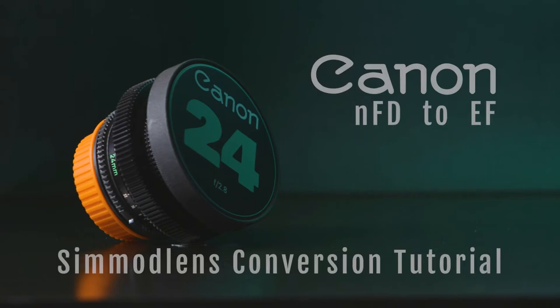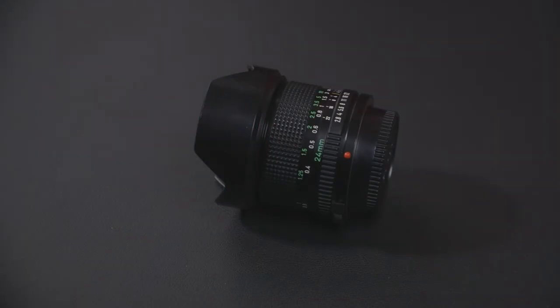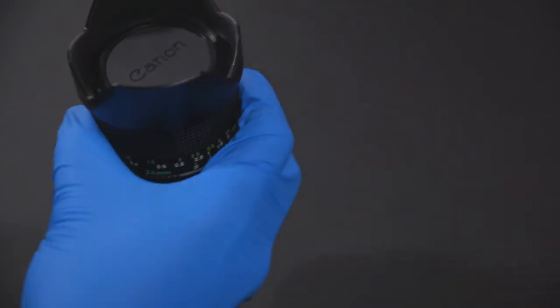Hello everyone. This is a Canon NFD 24mm 2.8. In this tutorial, I will be showing you how to convert this lens into EF using the SIMOD Lens Conversion Kit.